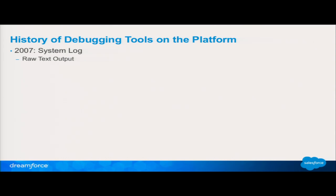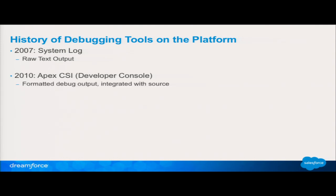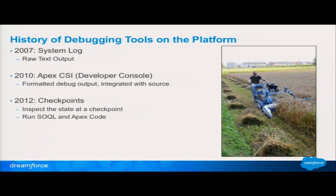It could get the job done, but it wasn't exactly the easiest. So fast forward to 2010 — we created Apex CSI, which you now know as the developer console. It formatted the log output so it's easier to see what's going on. The timing is in there, we've linked it to the source so you can see where you're at in the source code, you can see the stack. Still not 100% of what you're looking for. So we tried to get farther with checkpoints.